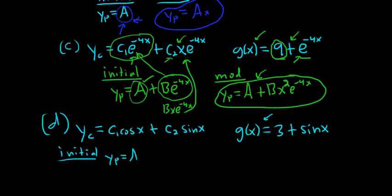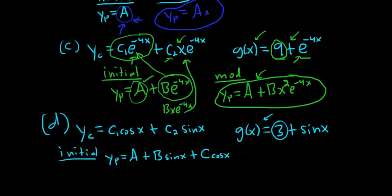Based on g, we have two guesses again. We have a constant A for the 3. And whenever you have a sine, you have to have a sine and cosine — so plus B sine x plus C cosine x. If you had a cosine, it would be the same — they always come in pairs. That's our initial.